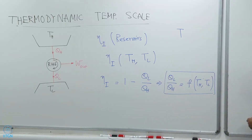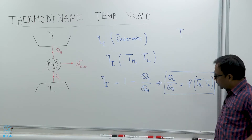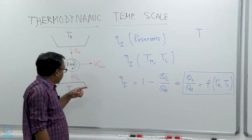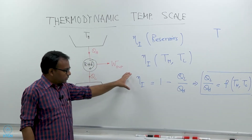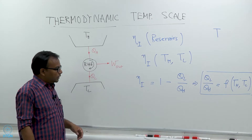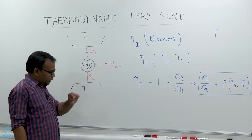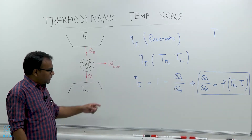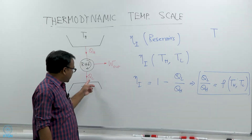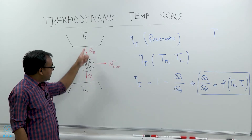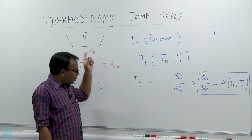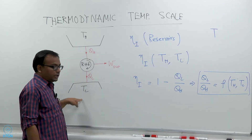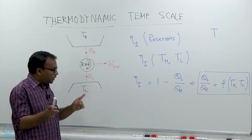This is a very interesting conclusion. We have shown — and this is just a logical extrapolation from the second law statements — by logically extrapolating the Clausius and the Kelvin-Planck statements, that the ratio of the heat rejected to the low temperature reservoir and the heat taken from the high temperature reservoir is only a function of T_H and T_L alone and nothing else.